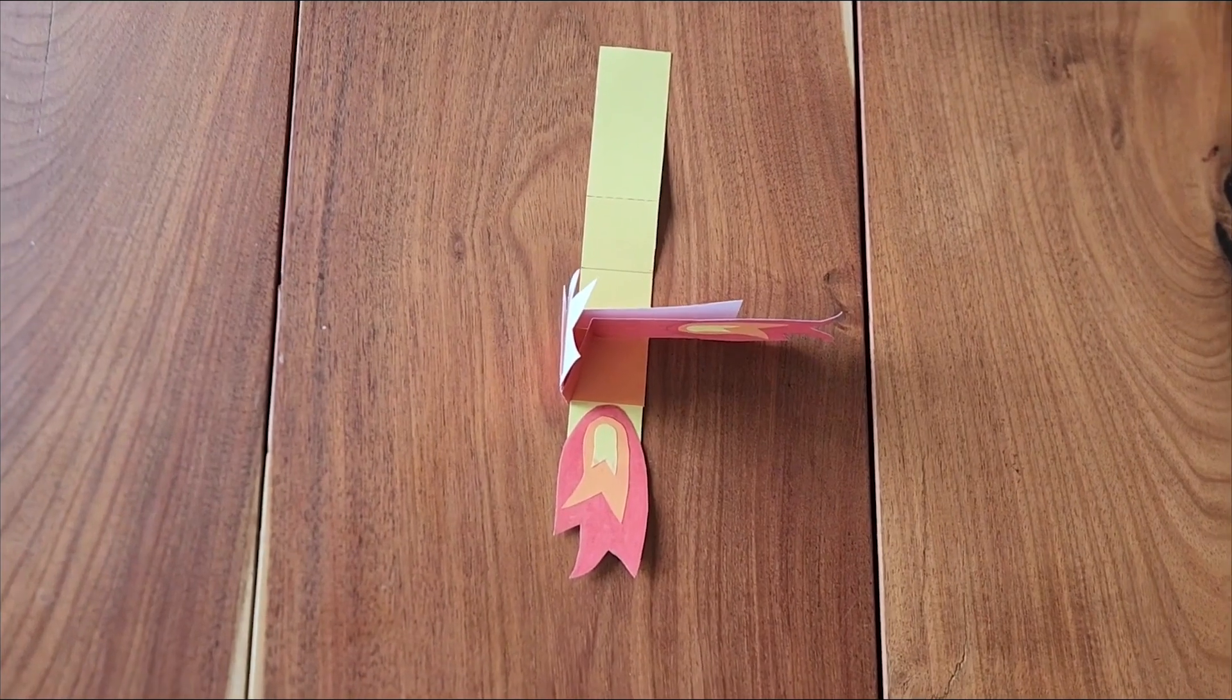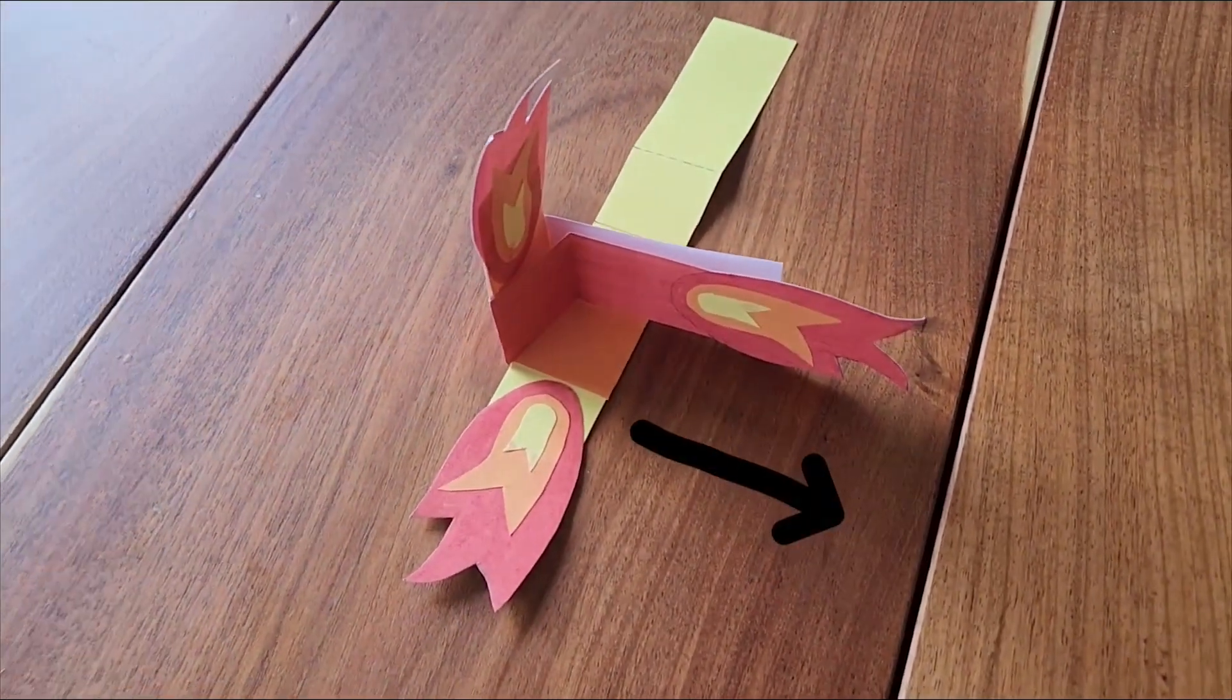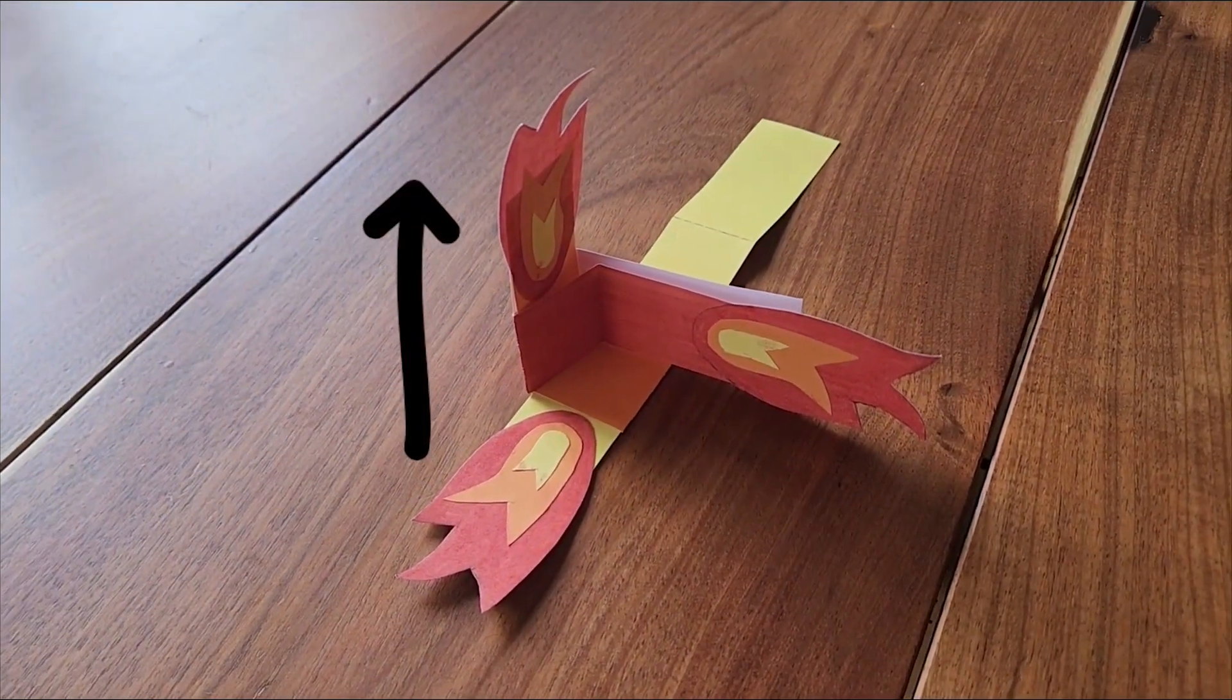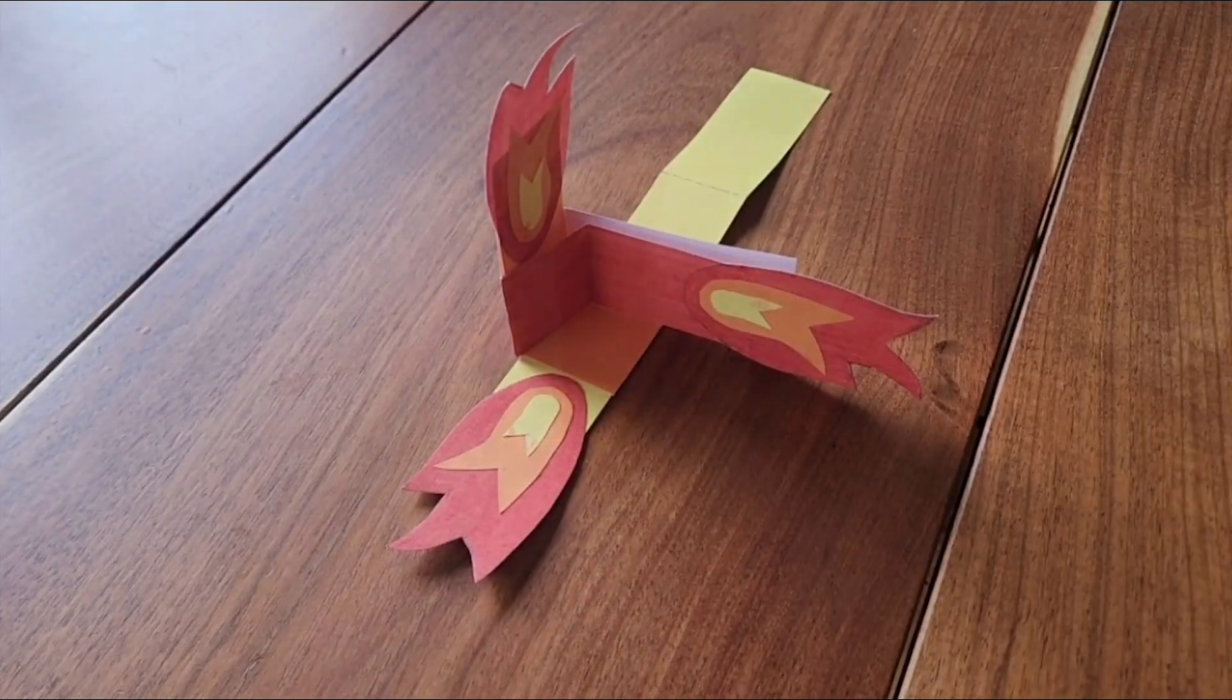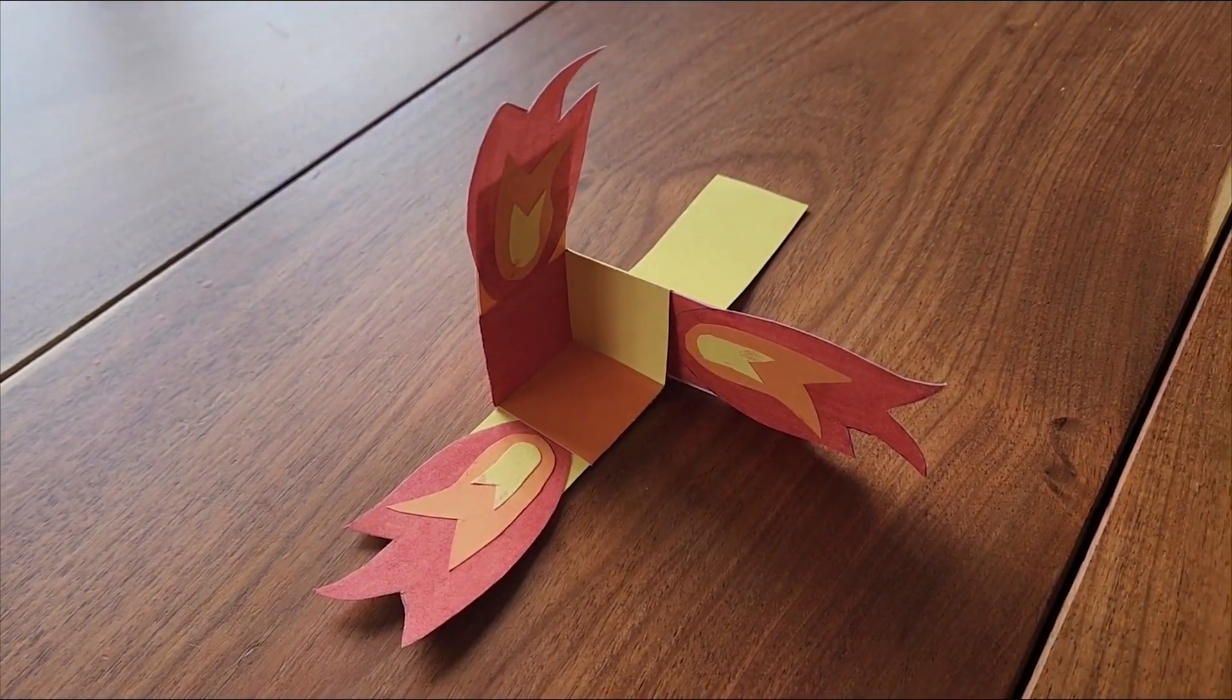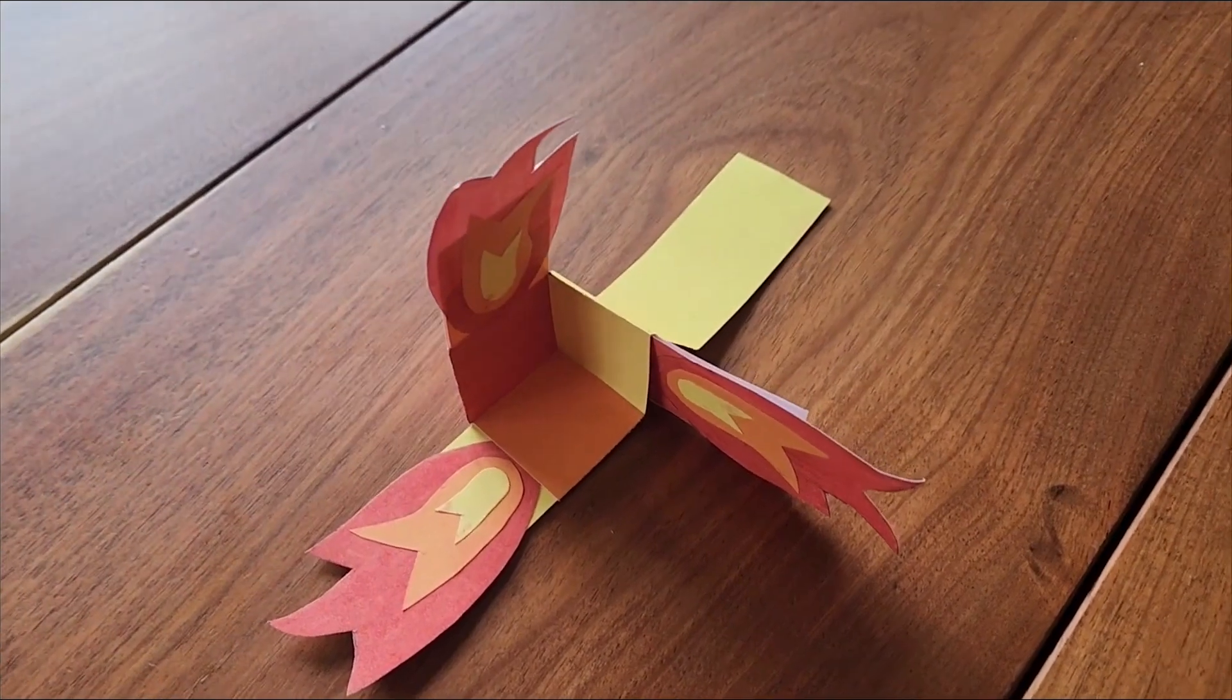Now do the same with the orange strip. The red one will now be horizontal and the orange one will be vertical. Once this is done, they form what looks like the corner of a cube.